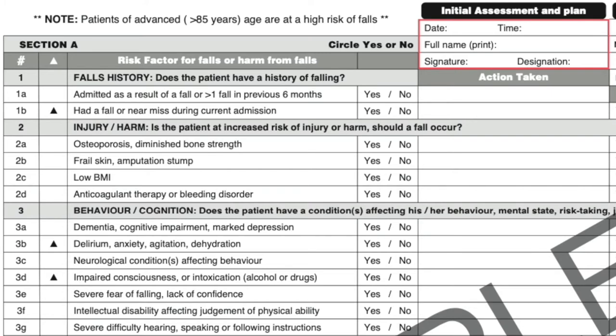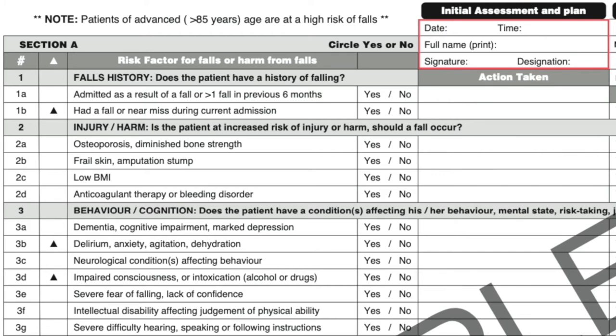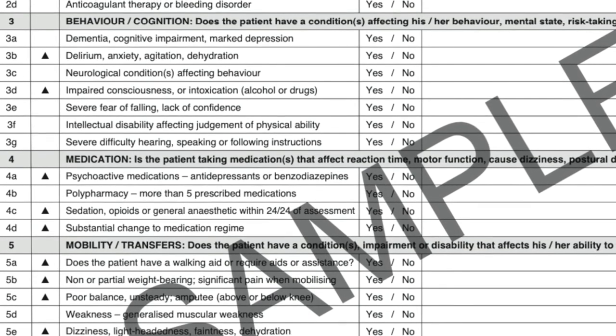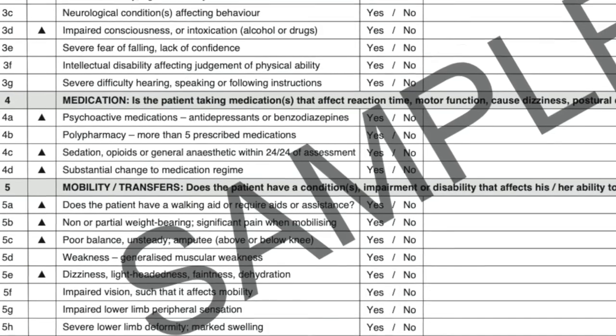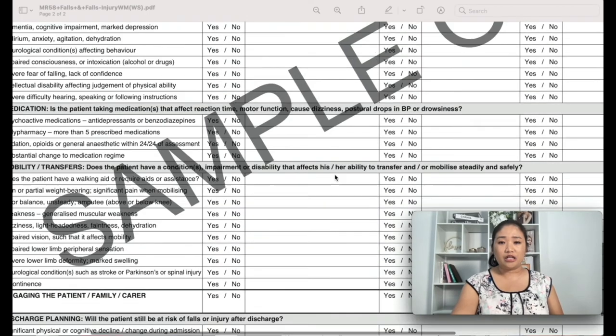Page two covers the risk factors for falls — the initial assessment date and plan. This is very important and is done when the patient first arrives in the ward within eight hours. You record the date, time, full name, signature, and designation (which should be an RN). Section A point 1 covers falls history: was the patient admitted as a result of a fall, or have they had more than one fall in the previous six months? If yes, circle yes; if not, circle no. All risk factors related to falls or harm from falls are listed in Section A.